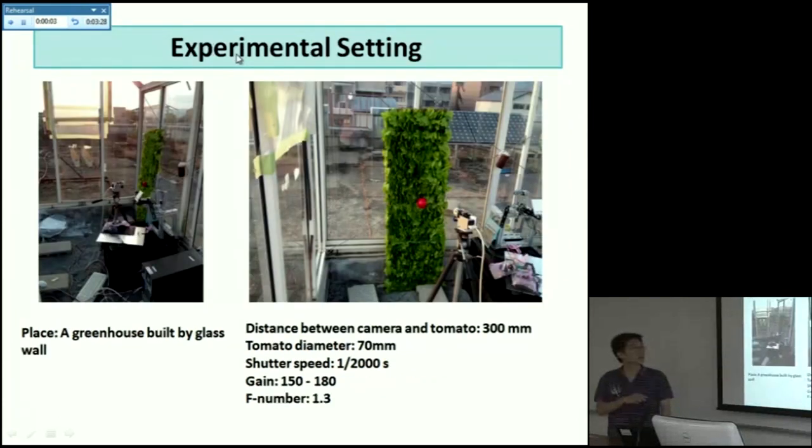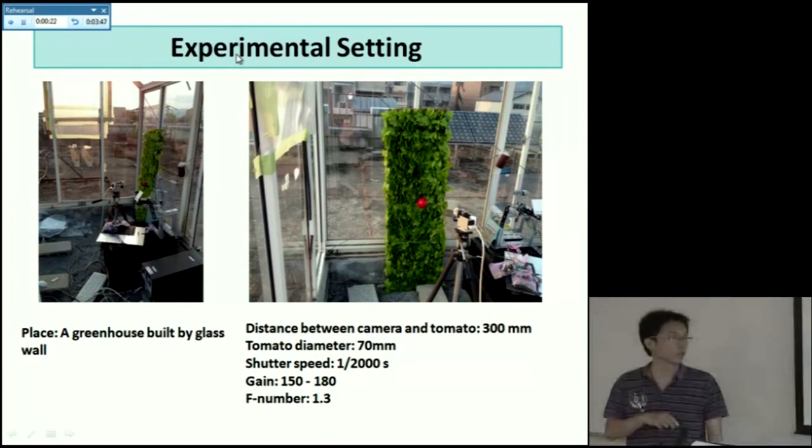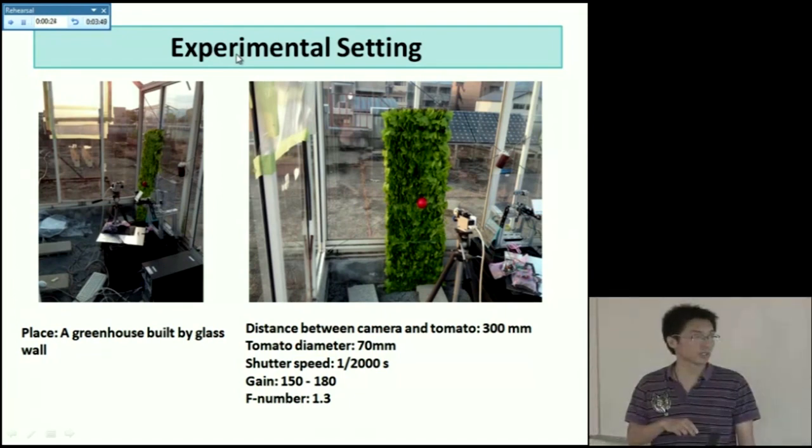And this is how I set my experiment. The place is in a greenhouse built by a glass wall. And the camera is in front of this tomato. The distance between camera and tomato is 300 millimeter. The tomato diameter is about 70 millimeter. And this is some setting of the camera. The shutter speed is 1 over 2000 second. The gain is from 150 to 180, corresponding to different lighting density. And the F number is 1.3.